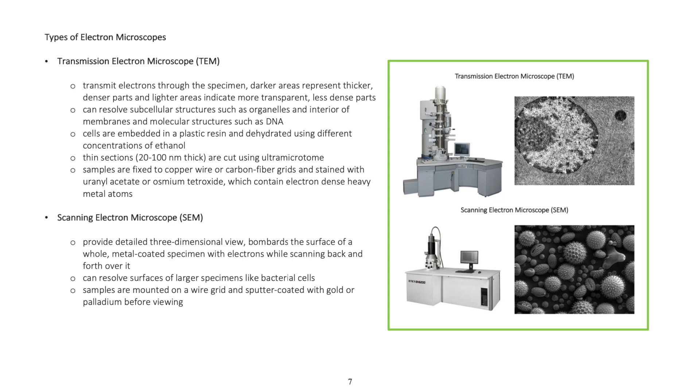Thin sections about 20 to 100 nanometers thick are cut using an ultramicrotome. Samples are fixed to copper wire or carbon fiber grids and stained with uranyl acetate or osmium tetroxide, which contain electron-dense heavy metal atoms.